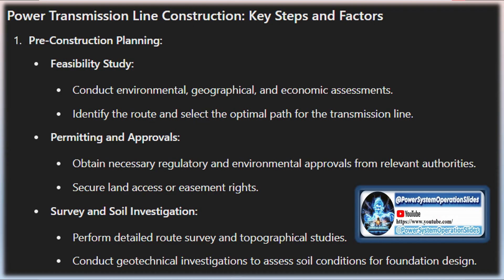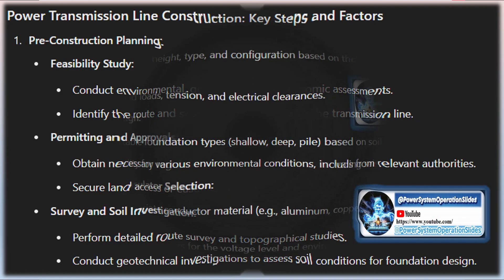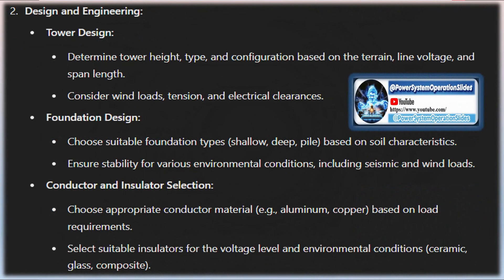The first step is to conduct a preliminary feasibility study, which involves analyzing multiple potential corridors for the transmission line. This initial study considers several factors, including the geographical layout, existing infrastructure, environmental constraints, and technical requirements.